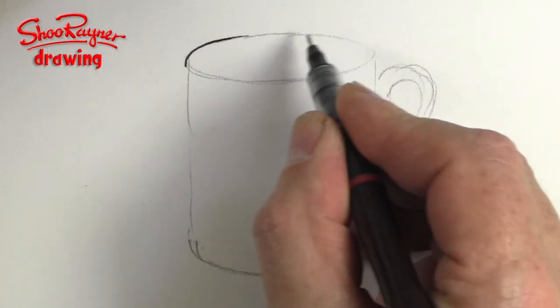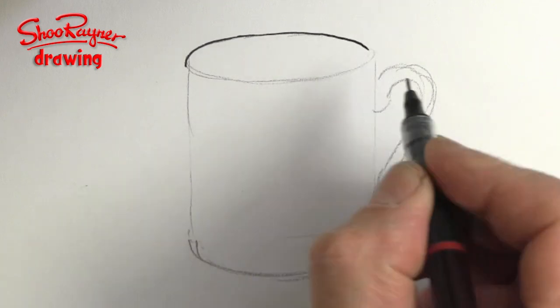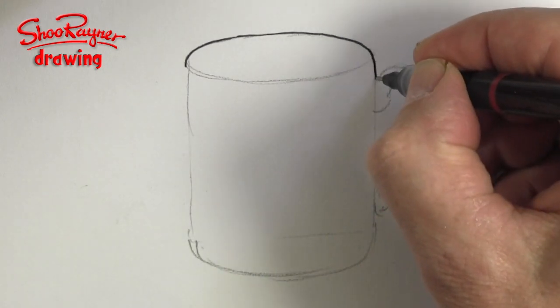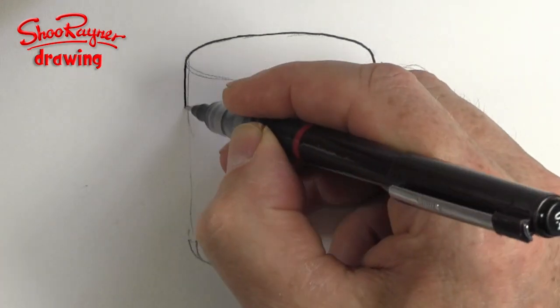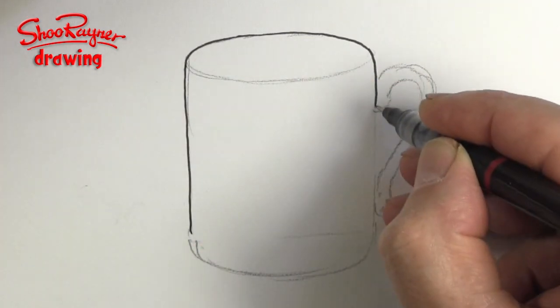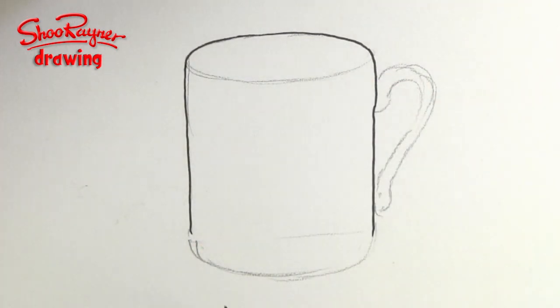So I'm going to go around this top part of the ellipse and down here all the way around. Just going to go around the outside first of all.